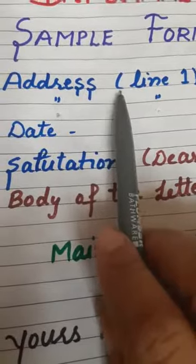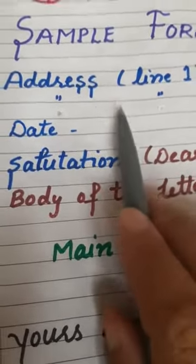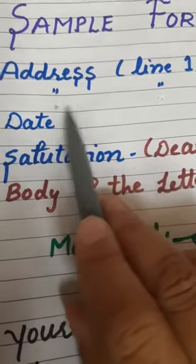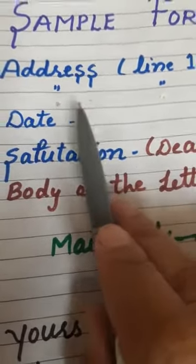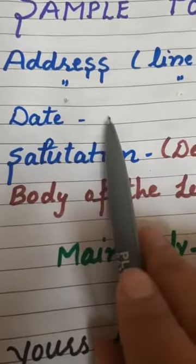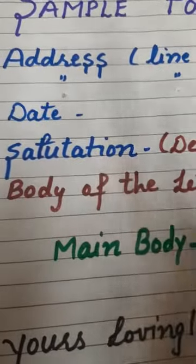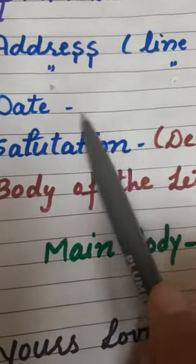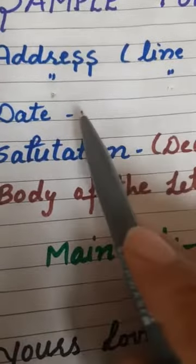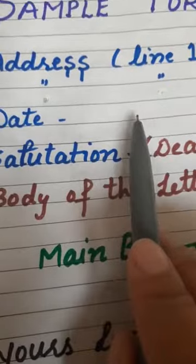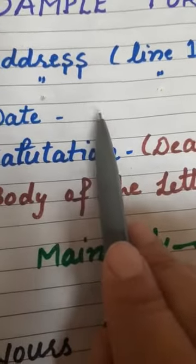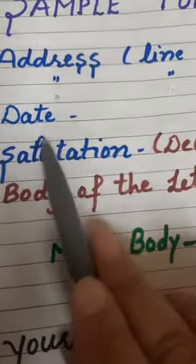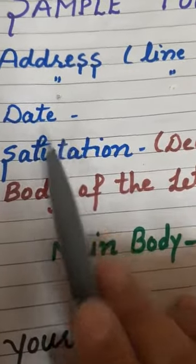In the previous video I explained how to write an informal letter. At the top there should be the sender's address in two or three lines only — not more than three lines. After finishing the sender's address, leave one line. Then write the date. The date format should be like: 16th May 2020 — not 16/05/2020.